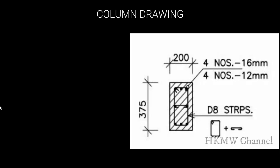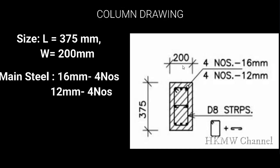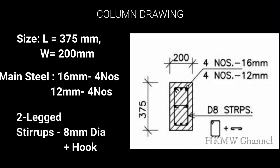As shown in the figure, this is a column having dimensions of length 375 mm and width 200 mm. The main steel — the corner four rods — are of 16 mm diameter, and the inner four rods are of 12 mm diameter, giving a total of 8 bars. It also has a two-legged stirrup of 8 mm diameter with a hook at the center.